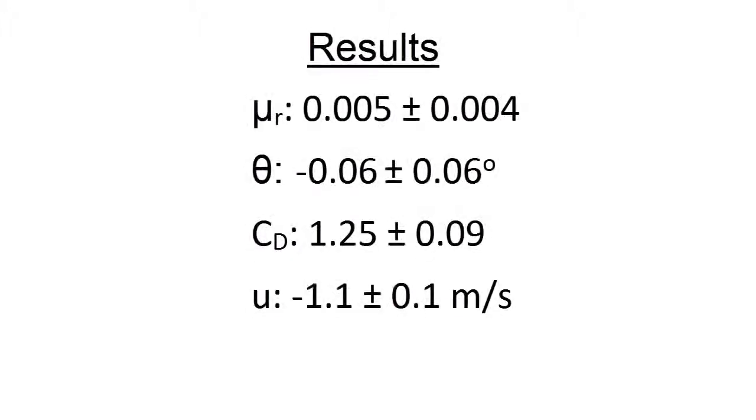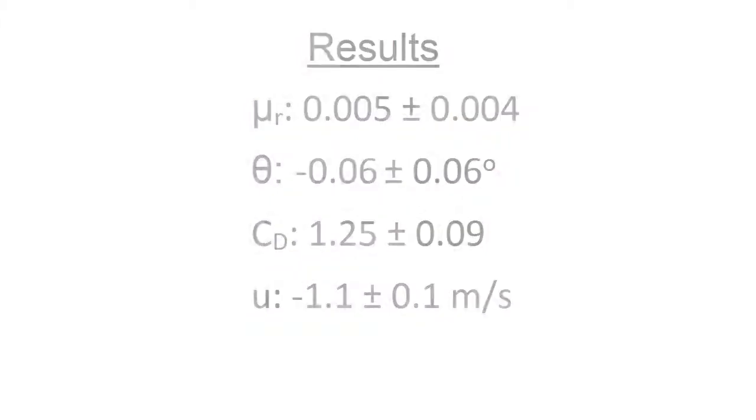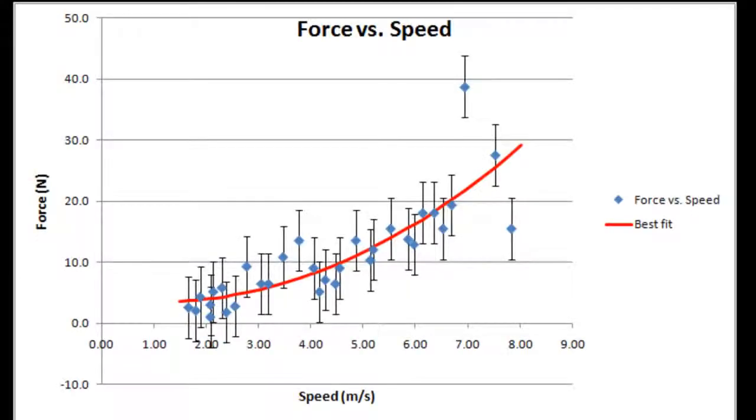For our experiment, we use the chi-square analysis and play with the values mentioned. We get mu r to be 0.005, theta to be negative 0.06 degrees, CD to be 1.25, and u to be negative 1.1 meters per second. These values look decent for the conditions that we had in our experiment.